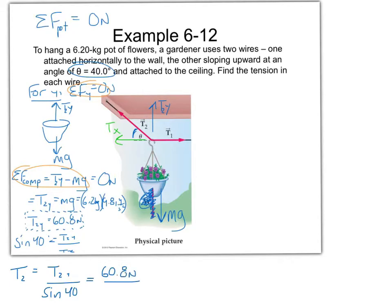So what is the tension in line two? 60.8 divided by sine of 40, I get 94.6 newtons. That's what we get for our tension in line two.